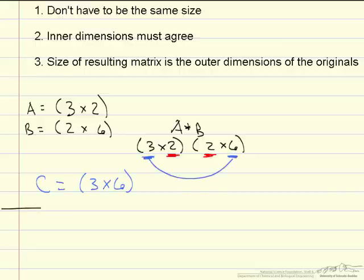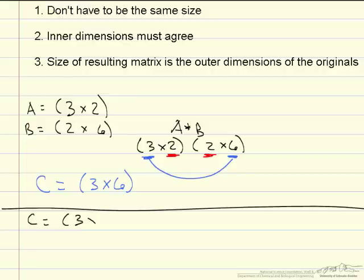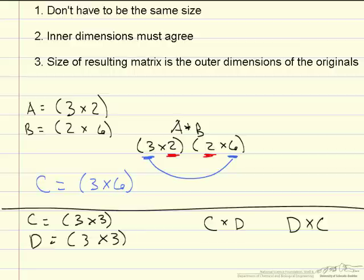Even if we do happen to have two matrices that are the exact same size — in this case 3 by 3 and 3 by 3 — it does not mean that C times D is going to equal D times C. This is much different from other multiplications. The order in this case does matter, although you would end up with the same size matrix either way.